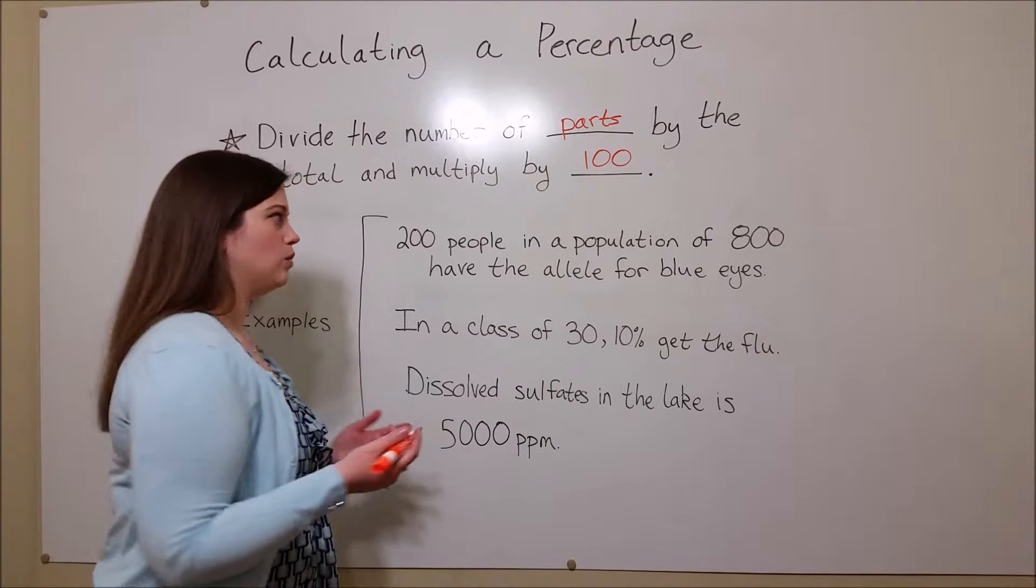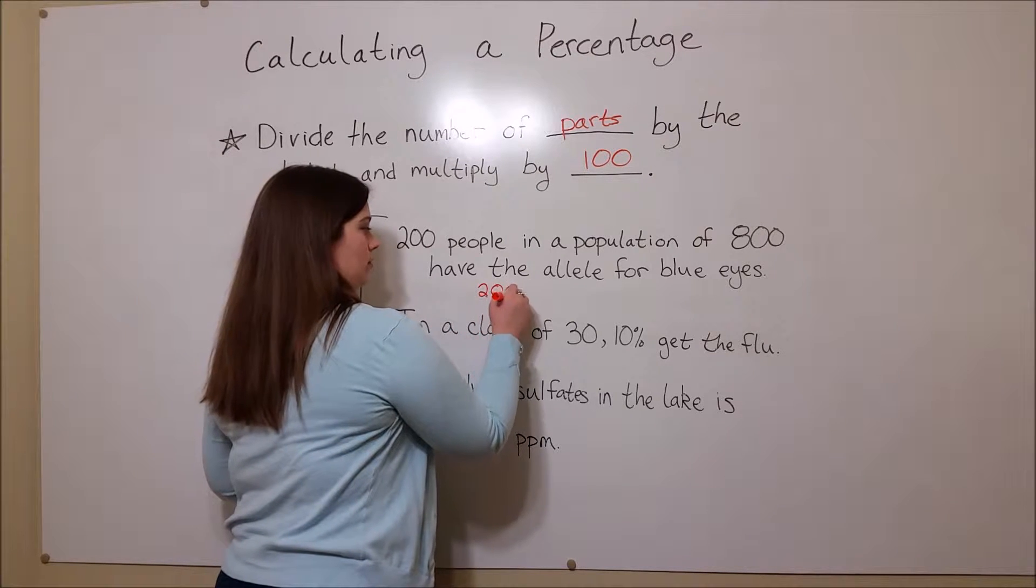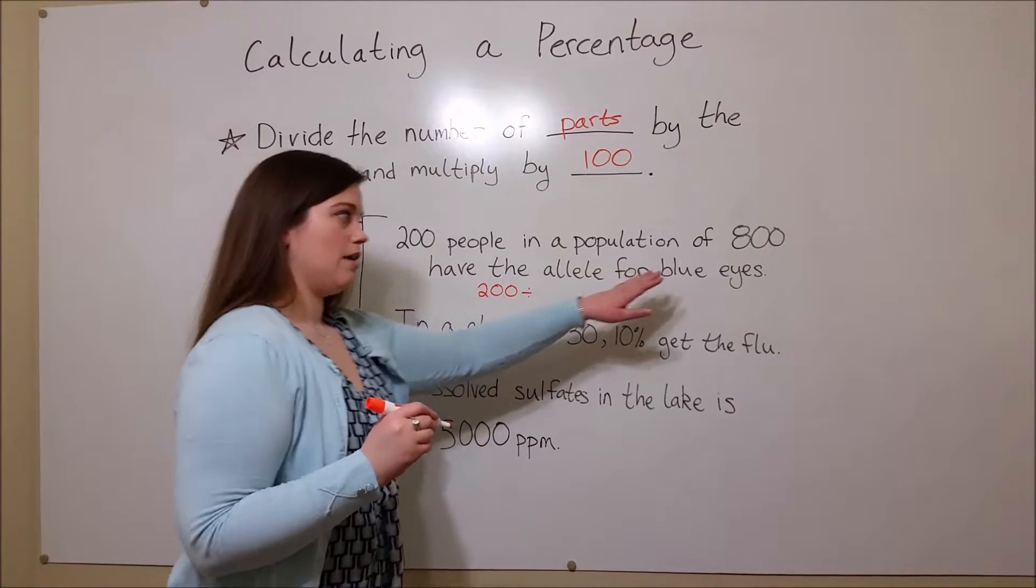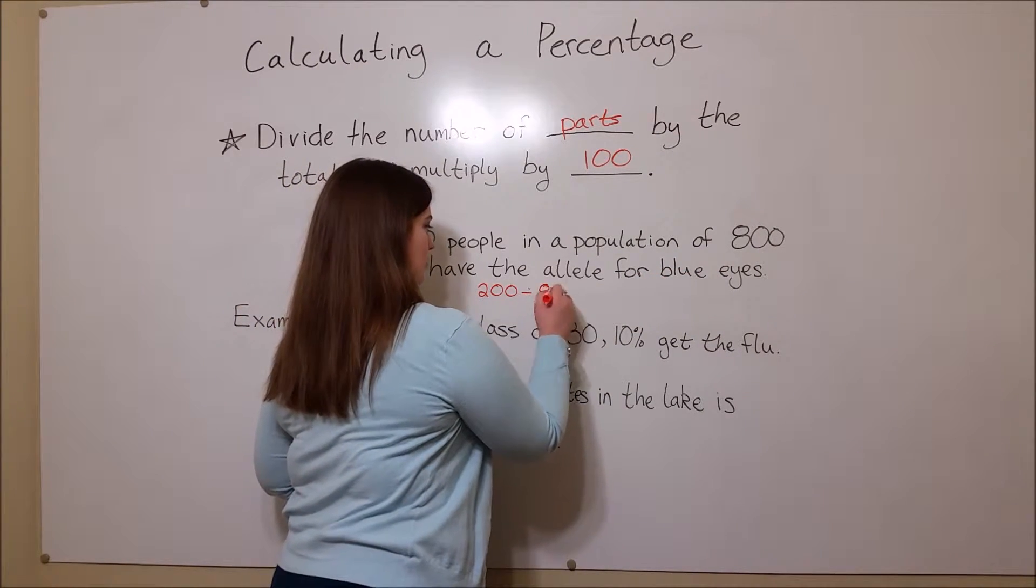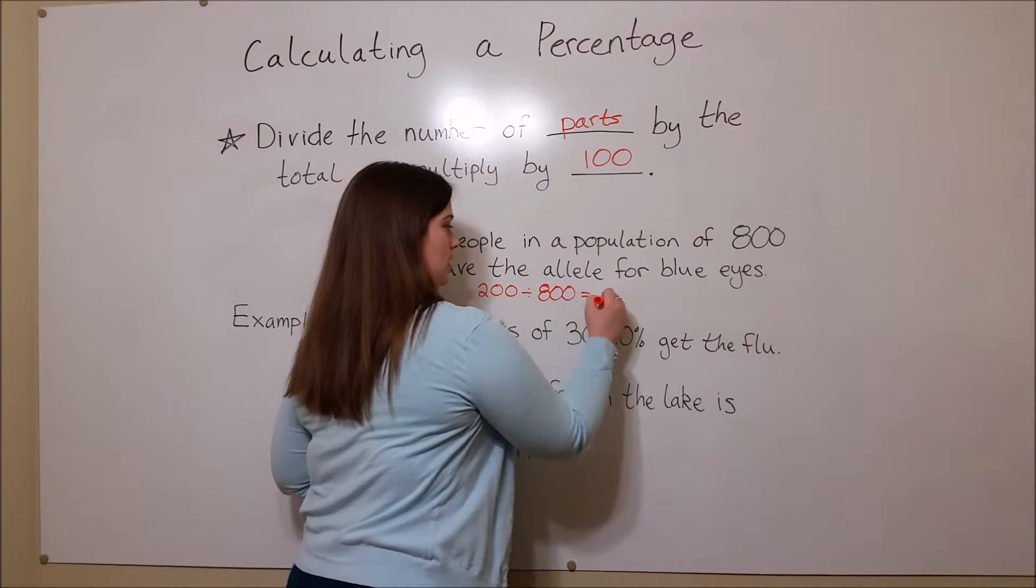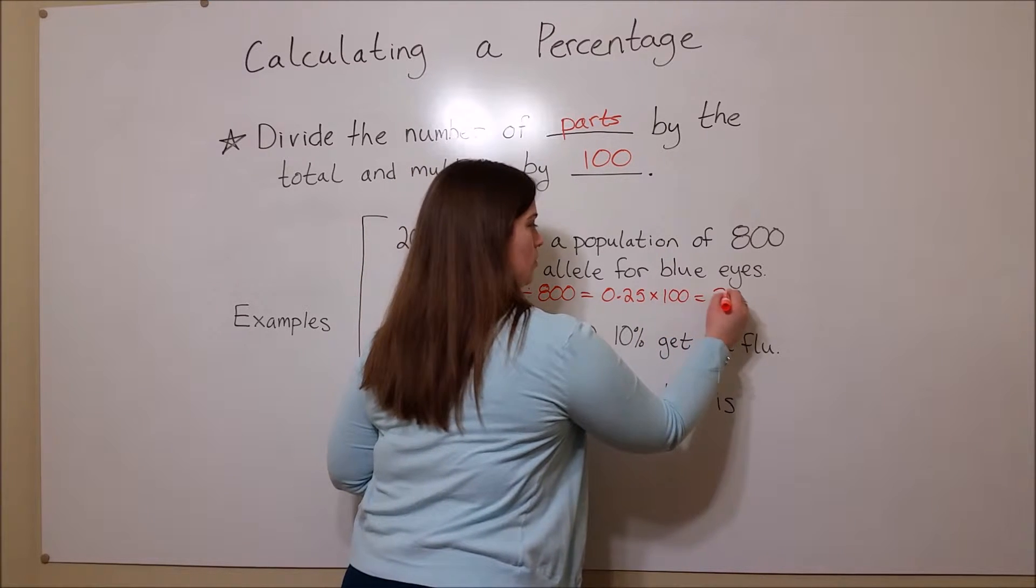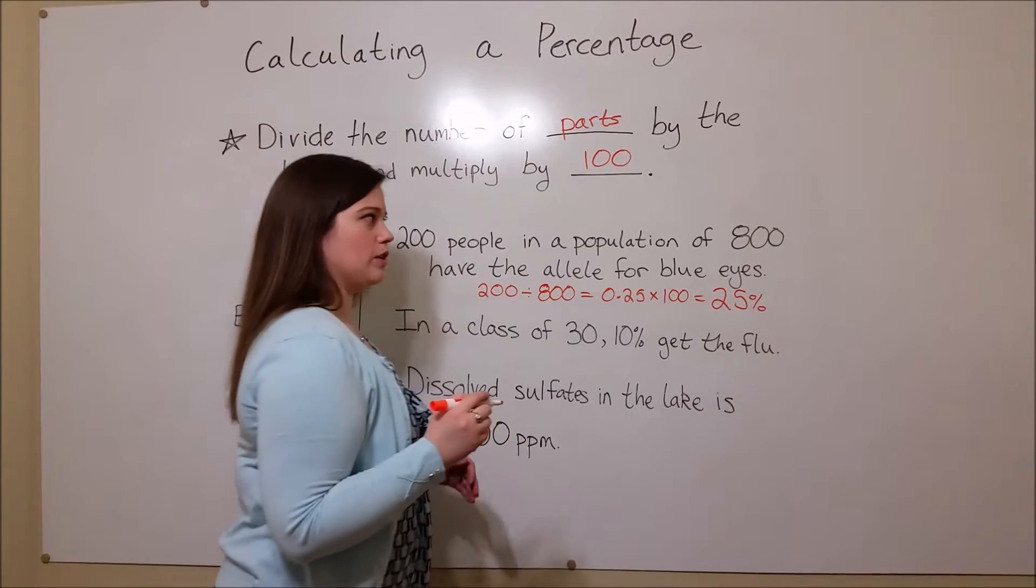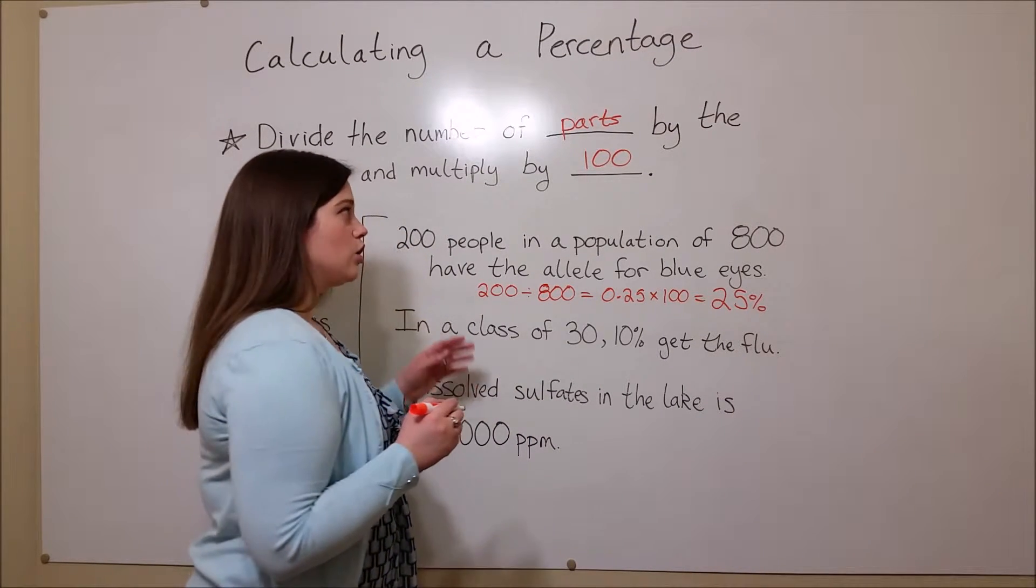what is that percentage? Well, the number of parts, 200, divided by the number of the total, which is 800, this equals 0.25 times 100 equals 25%. So 25% of this population has the allele for blue eyes.